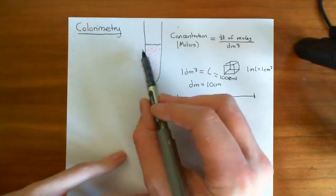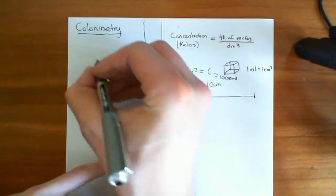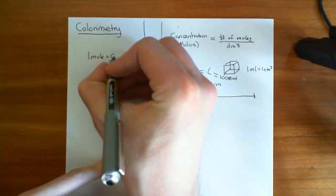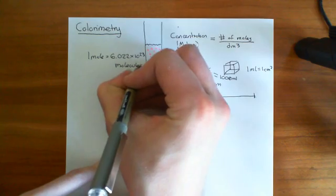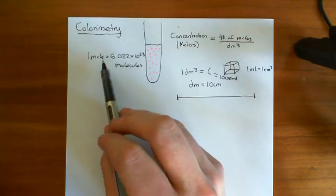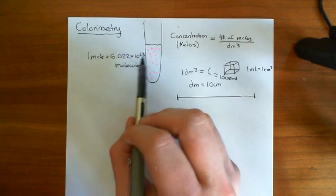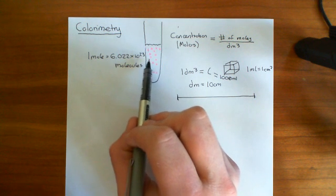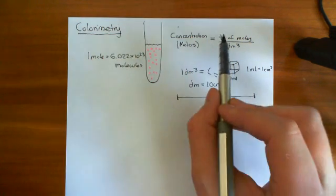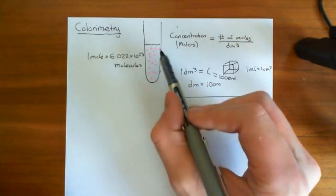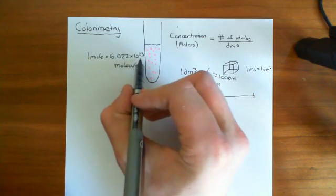So basically, concentration in molars means: if you took a decimetre cubed of this sample, how many moles would be in it? One mole is equal to a very large number — 6.022 times 10 to the 23 molecules. So if you have a mole of protein, that means you have 6.022 times 10 to the 23 protein molecules. If one of these pink dots represents a protein molecule and you have a mole of them, you need that many pink dots.